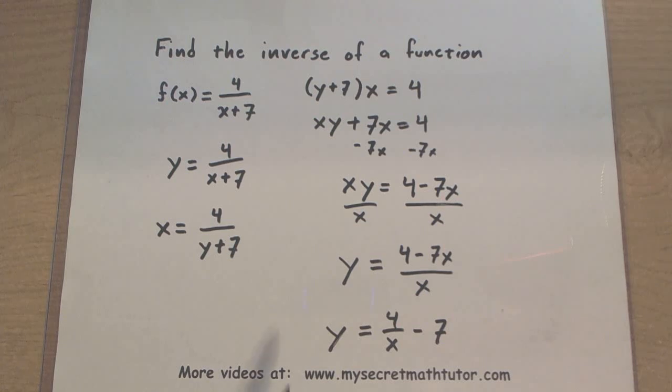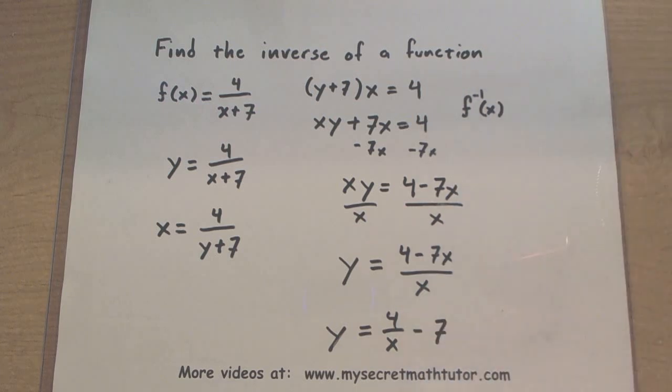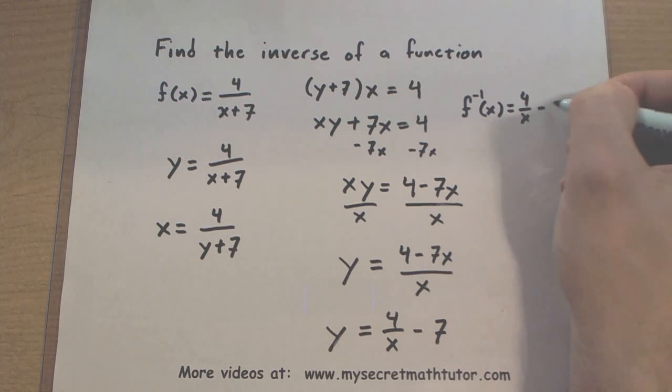Now, there is one last step. We want to put in our function notation. So, this is basically the inverse. And the way we write that is we have the f of x. But since it is the inverse, we're going to put a negative 1 right there. So, equals 4 over x minus 7.